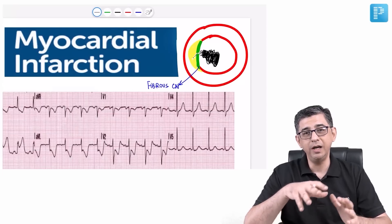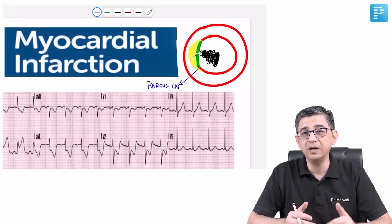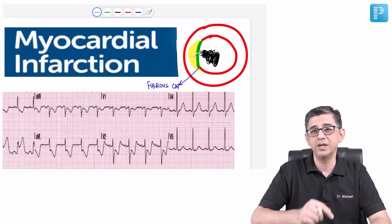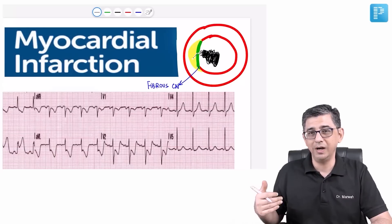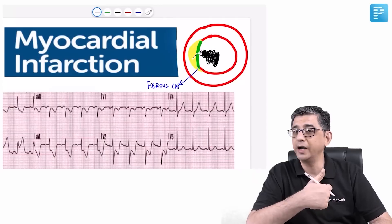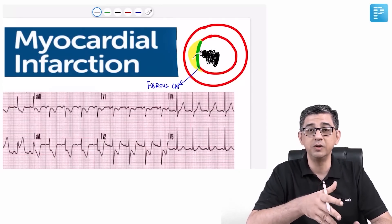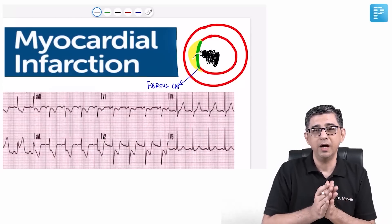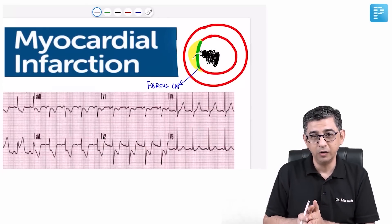In non-ST elevation MI, the clot is platelet-rich. Because it is platelet-rich, we use mainly antiplatelet and antithrombotic drugs, and thrombolytics are not effective — in fact, thrombolysis is contraindicated in non-ST elevation MI. The basic concept is: STEMI has a fibrin-rich clot so fibrinolytics work, but in NSTEMI you have a platelet-rich clot, so you must adjust your strategy accordingly.